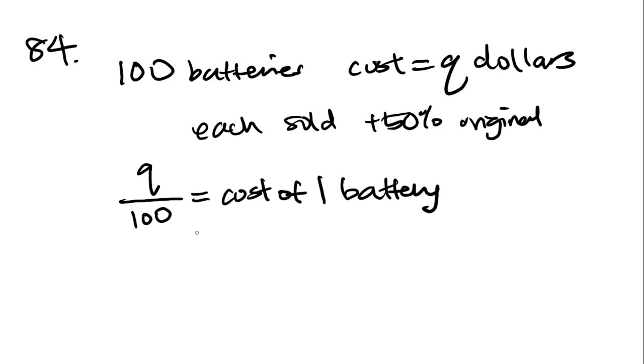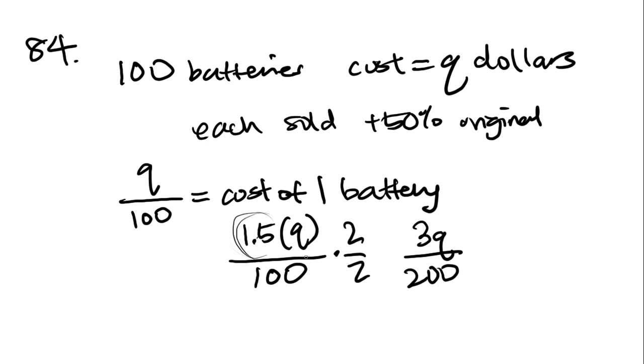Secondly, they want to know, they tell us that each battery was sold at 50% above the original cost, right? So 50% above this. So what is that going to be? 50% above original cost means 1.5. So 1.5Q over 100. Is that one of the answer choices? No, it isn't. But what is one of the answer choices is 3Q over 200, which is really just this times 2 over 2, because I guess in the answer choices they want to make sure that you don't have a decimal, or at least they're saying in terms of Q which one is the same as the answer. So if you multiply 1.5 by 2, you get 3Q. 100 times 2, you get 200. So that is the correct answer, and that is answer choice A.